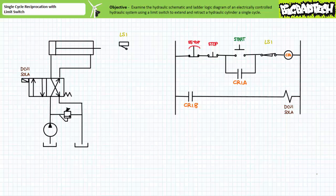Good day and welcome to Big Bad Tech. I'm your instructor Jim Pytel, and this is a short application example of an electrically controlled hydraulic system. Our objective is to examine both the hydraulic schematic and ladder logic diagram of an electrically controlled hydraulic system using both operator-initiated manual input and automatic mechanical input — in this case a limit switch — to extend and retract a hydraulic cylinder a single cycle. Such an action is commonly referred to as a single cycle reciprocation. Additionally, we'll introduce a couple problems with our system and see if we can predict the system's response given these input scenarios.